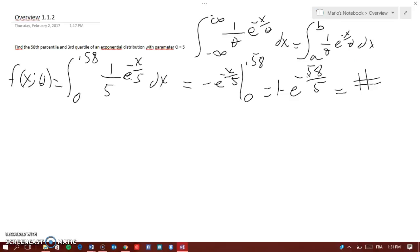And this is how you calculate the percentile of an exponential distribution with any parameter. You have to remember the formula for the PDF for the exponential distribution, and then like that you can find the 58th percentile.